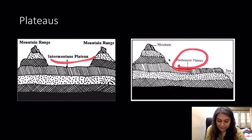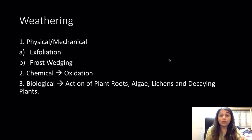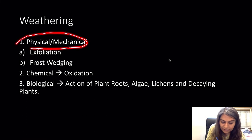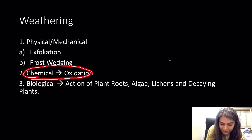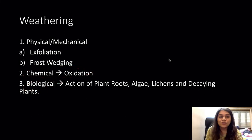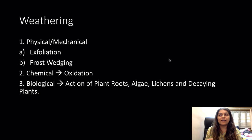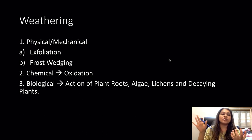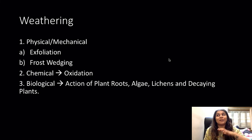Now we move on to exogenic processes — weathering. Weathering can be of three types: physical or mechanical, chemical, and biological. Exfoliation is a kind of physical weathering where the temperature of the top layer of rock exposed to the sun increases, causing minerals to expand. At night the temperature lowers and they compress — after years of this the top layer weakens and gets removed.